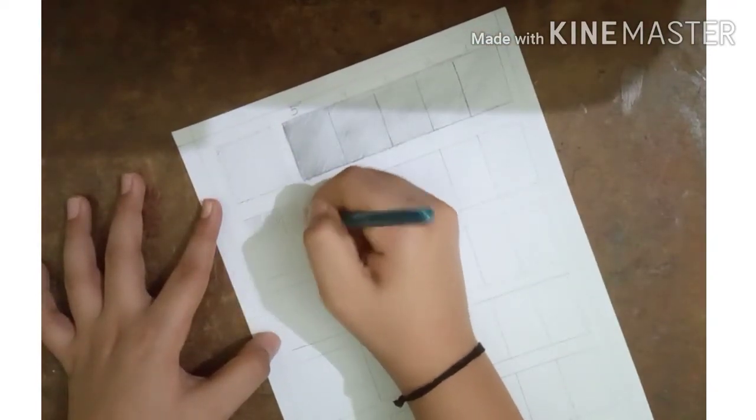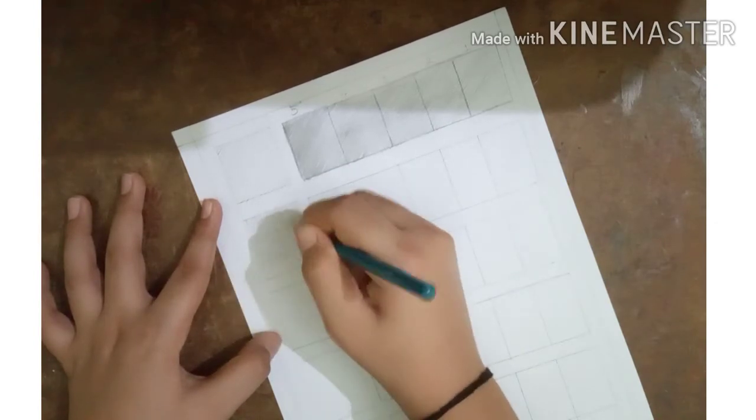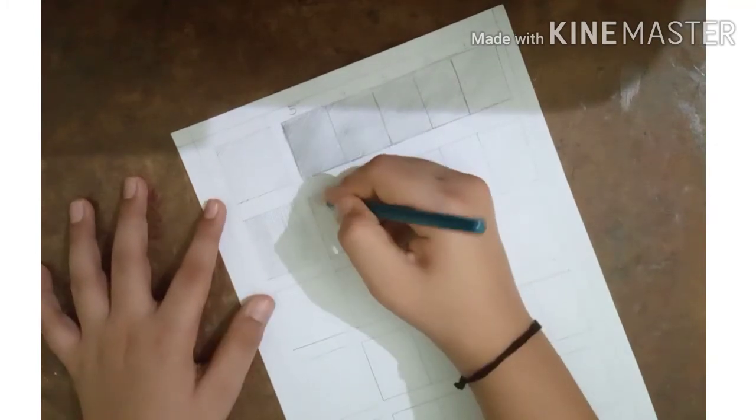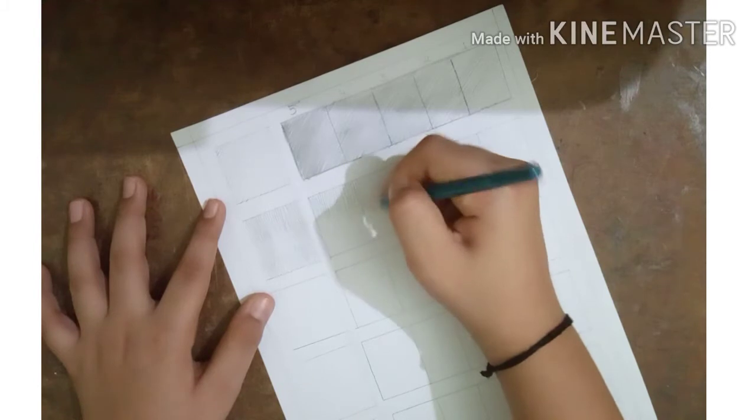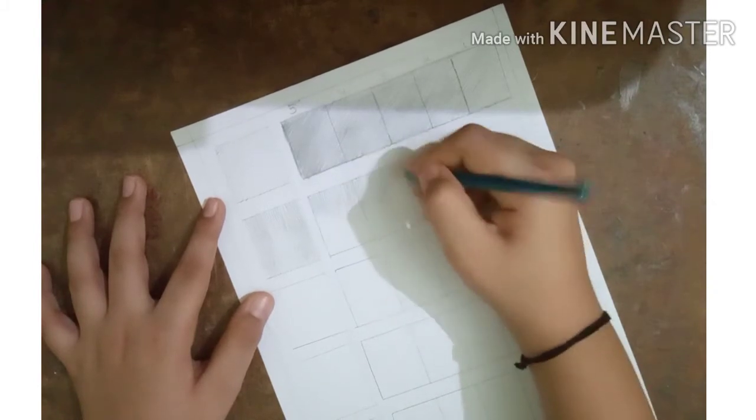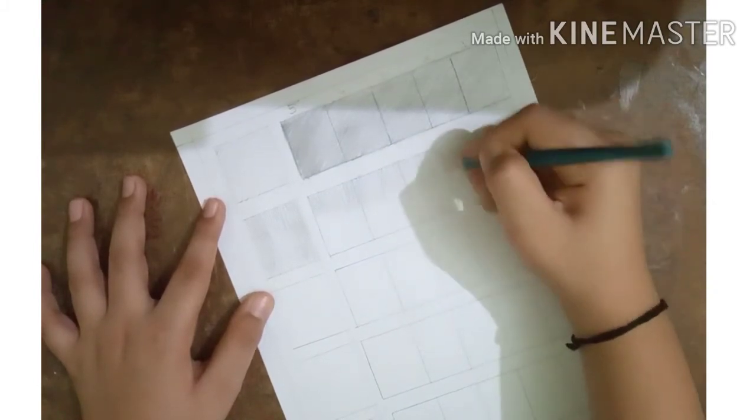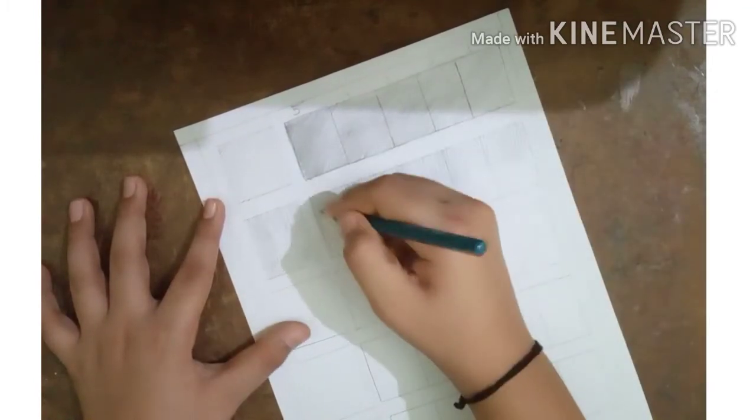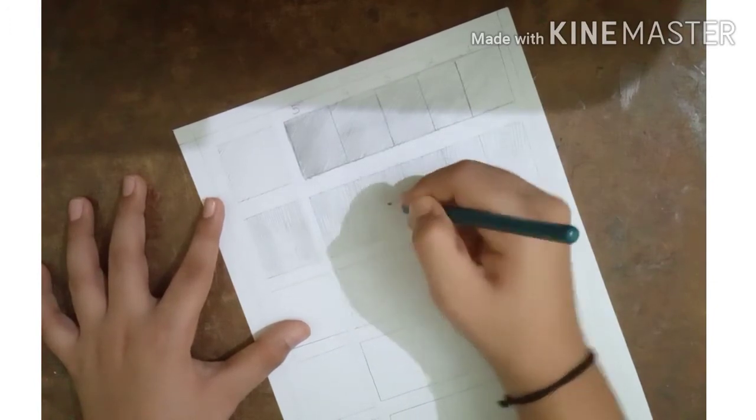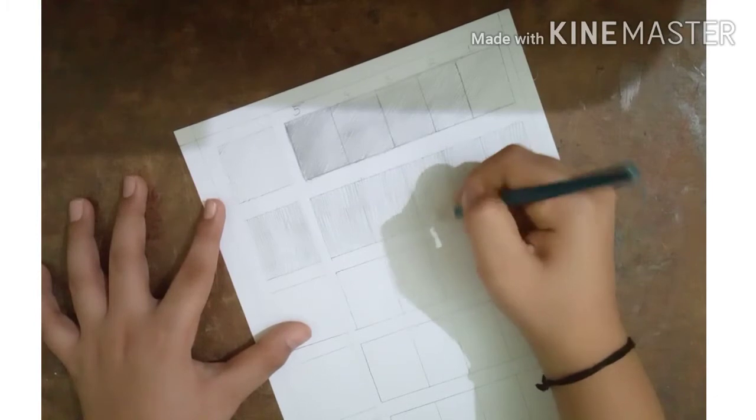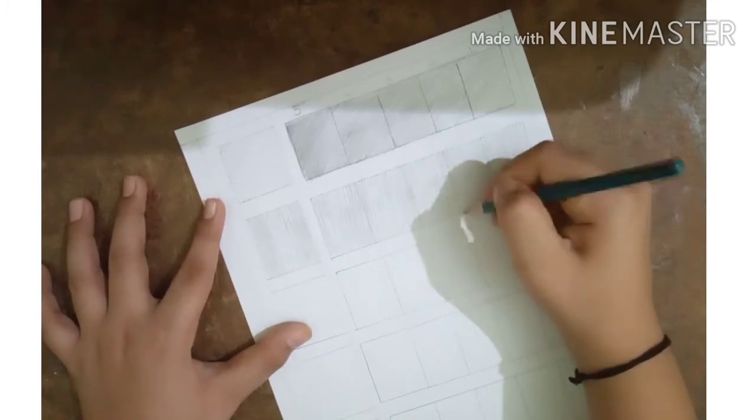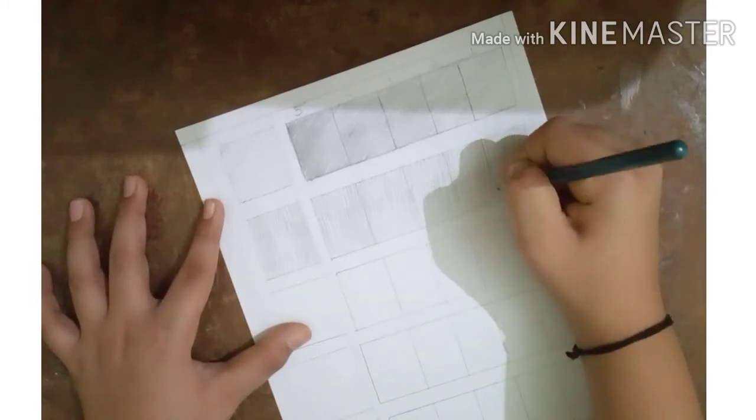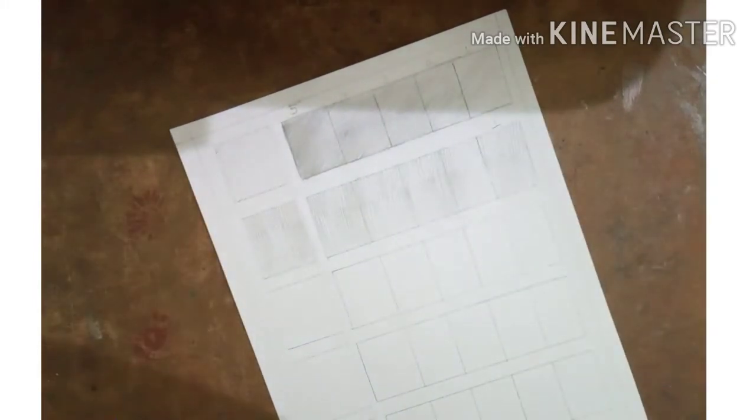Now we will shade vertical lines. Follow the same procedure as we have used for shading diagonal lines. Always use the same pressure of the pencil for shading in each of the boxes.